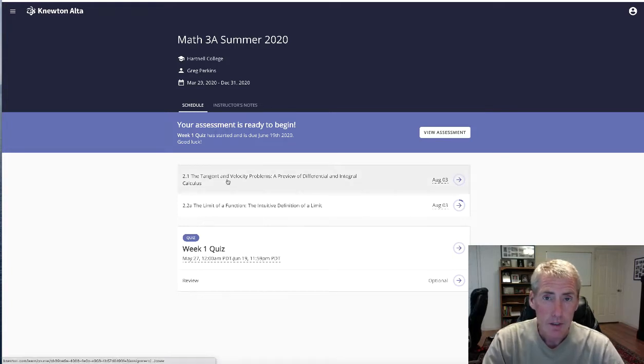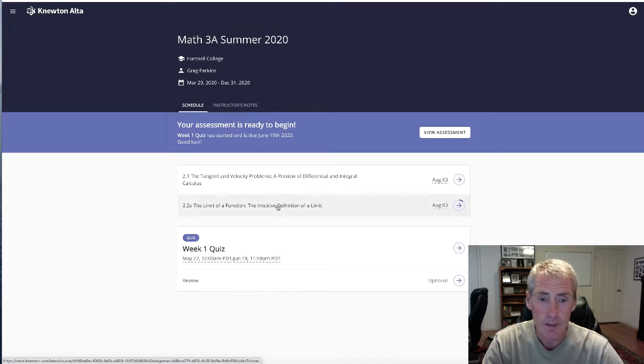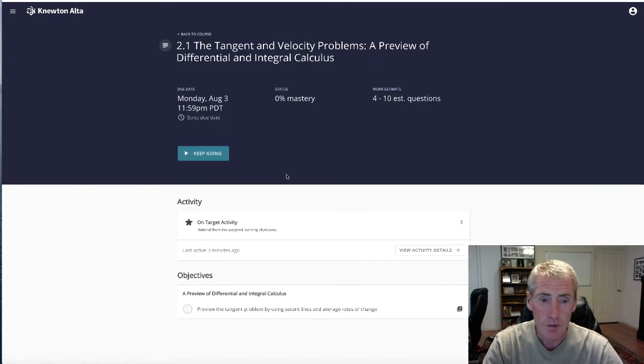So right now I've only enabled three assignments right here just for viewing purposes. When you log in, there will be a lot more available. There's a couple of homework sections right here and also the quiz for week one. With the quizzes, I'm not going to make them available until Friday morning, and then they will be due by Friday midnight. So you'll have all of Friday to go in and do that quiz. But first of all, for the homework. So you go ahead and click on section 2.1.